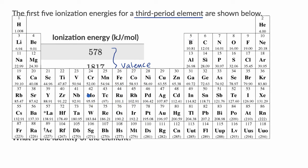So we have our periodic table of elements. We want a third period element, so it's going to be in this third row. And which of these has three valence electrons?